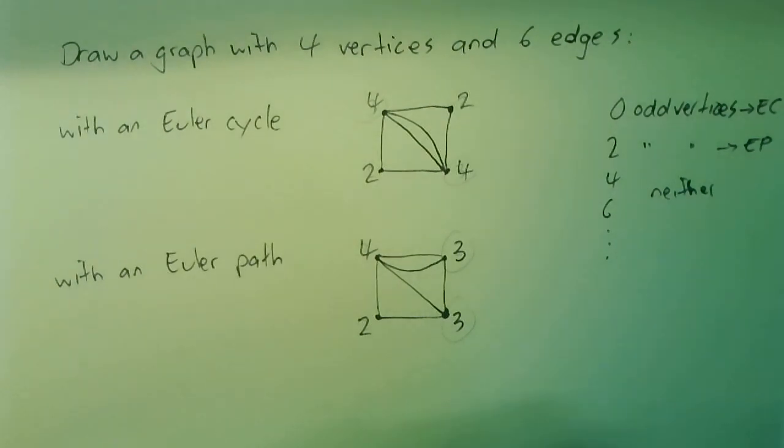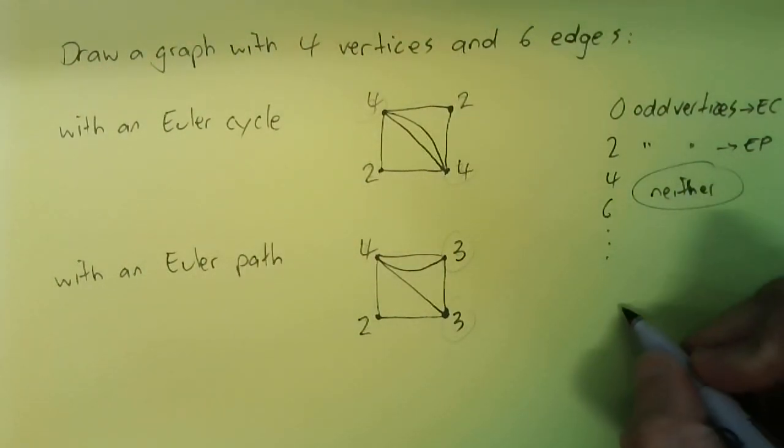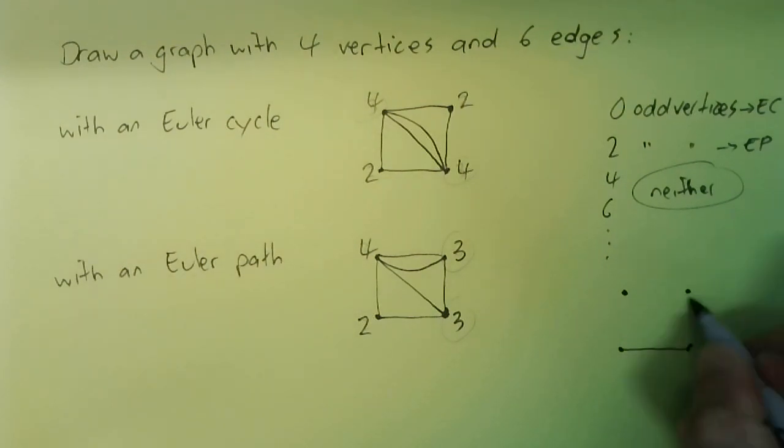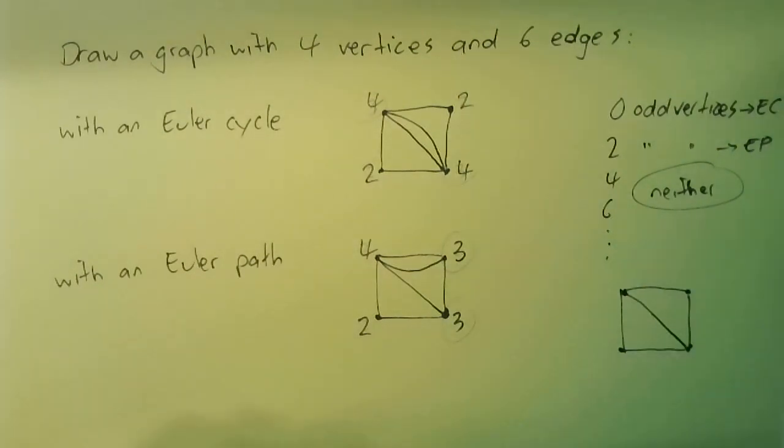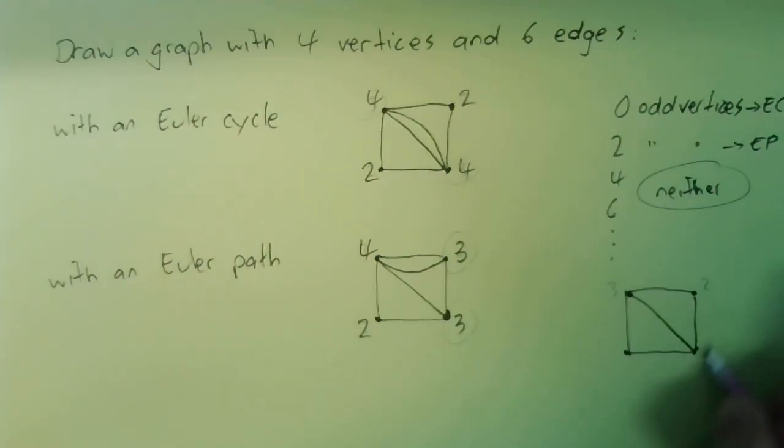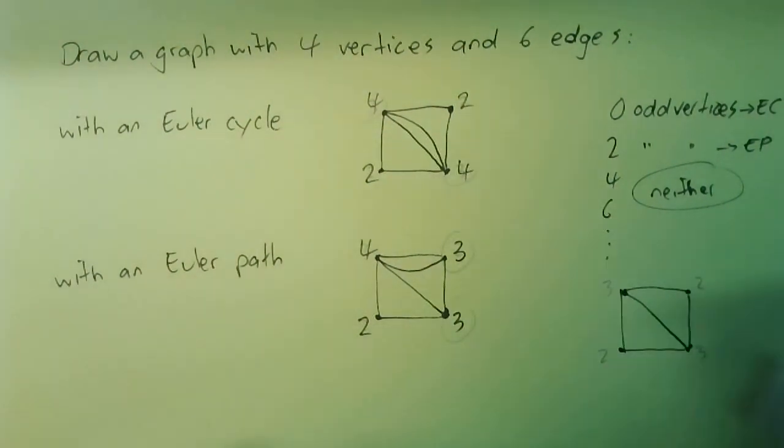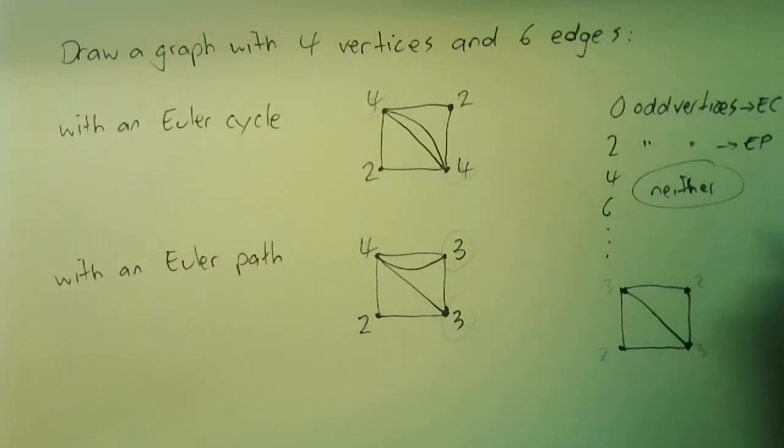While we're at it, what if you want to draw one that had neither? Let's do the same start: four dots, connect, connect, connect, connect, connect, connect. And my interim numbers are three, two, three, two. If I want to add my sixth edge and maintain it to be neither an Euler cycle nor an Euler path...